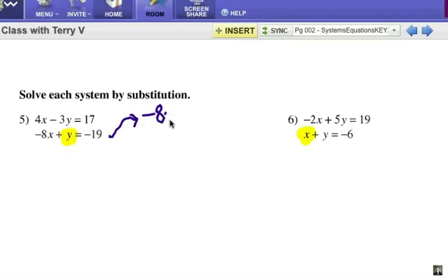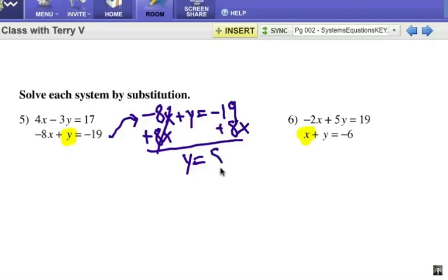So I'm going to take my equation negative 8x plus y equals negative 19 and I'm going to solve for y. I'm going to add 8x to each side. And that will give me y equals 8x minus 19. So what I've done is I have rewritten the second equation in terms of x. I know that this expression 8x minus 19 can be substituted in for y.